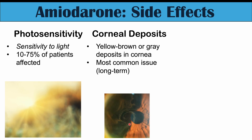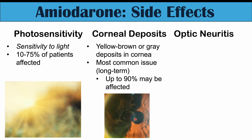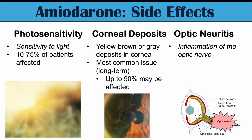Corneal deposits are actually the most common long-term issue, with up to 90% of patients susceptible, especially with long-term use. It's usually asymptomatic — amiodarone literally deposits into the cornea. Other patients can have optic neuritis, an inflammation of the optic nerve, occurring in about 1% of patients. This can lead to a reduction in vision, visual disturbances, and vision loss in some cases. It can be unilateral or bilateral.